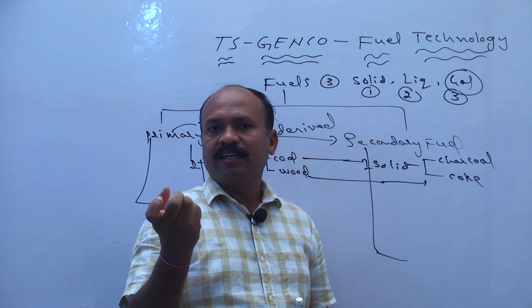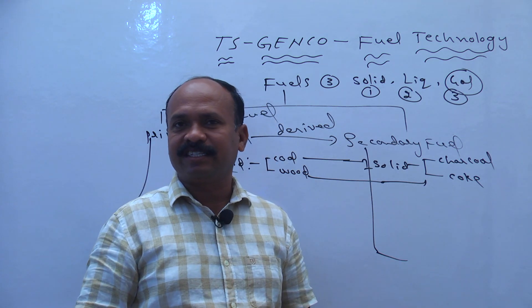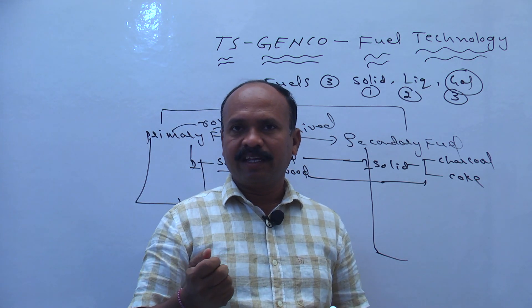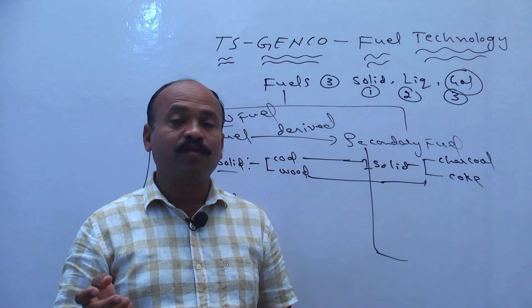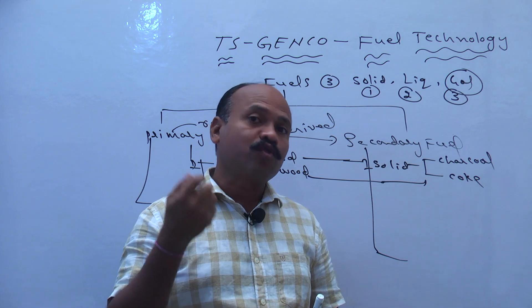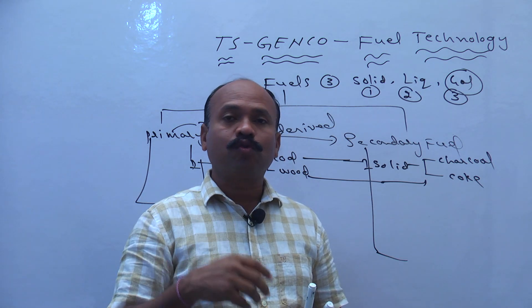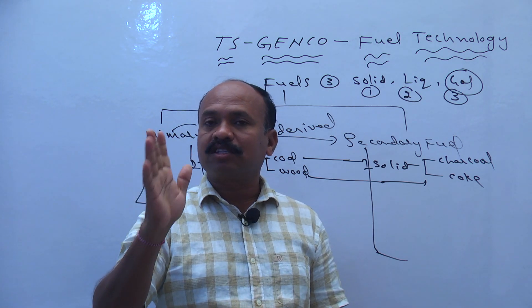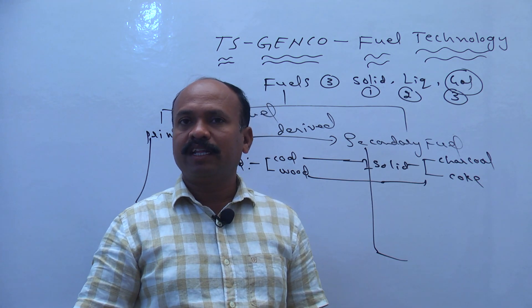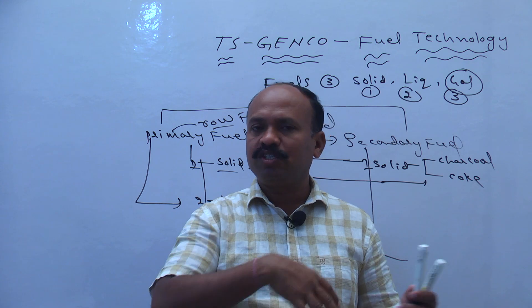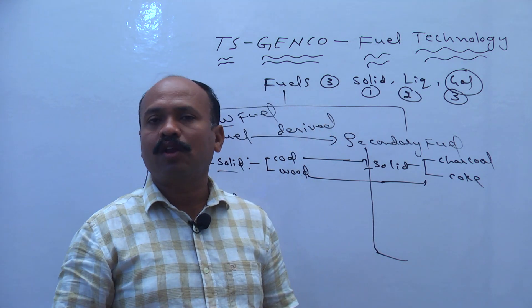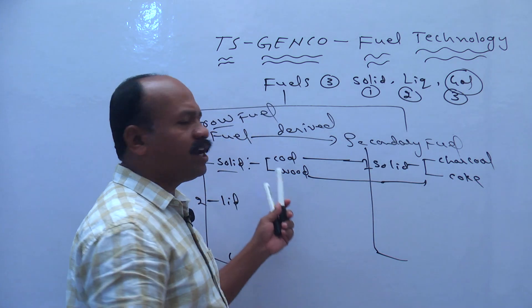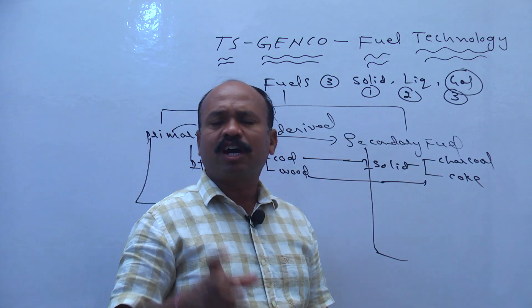For example coal, this coal we modify it as charcoal. Secondary fuel comes from primary fuel. One is charcoal. Next wood to coke. In absence of oxygen, the fuel ranking is increased. We have to prepare for unbonded carbon. We will try to make the coal as pulverized coal, charcoal.